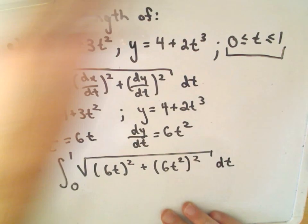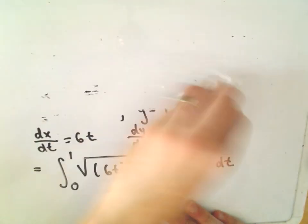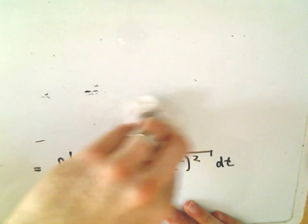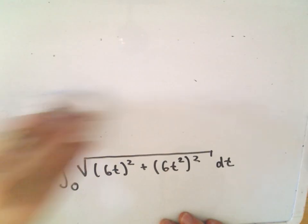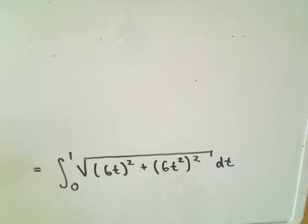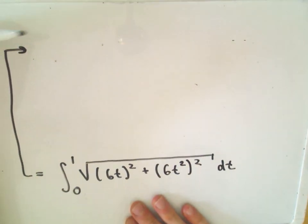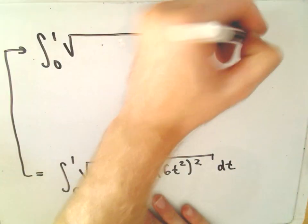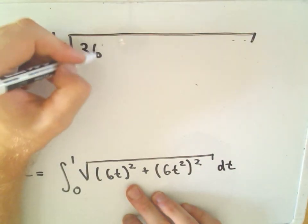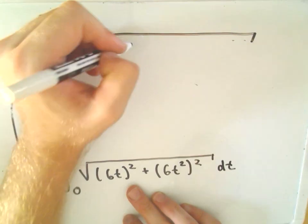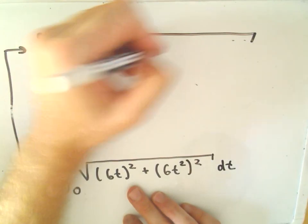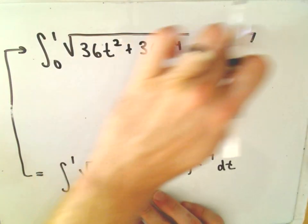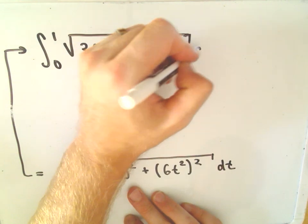So now we just have again just an integral problem that we have to deal with. And the way I think that we can integrate this one is to just basically factor and do a u substitution. So notice if we multiply everything out, we could write it as 36t squared plus 36t to the fourth, I keep making my square roots a bit too big, dt.